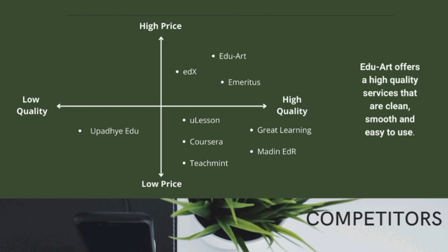EduEd has 8 competitors: Emeritus, EDX, Ulesson, Coursera, Tishmin, Great Learning, Madin Edu, and Upathe Edu. Emeritus, EDX, and EduEd are high quality and high price. Ulesson, Coursera, Tishmin, Great Learning, and Madin Edu are high quality and low price. Upathe Edu is low quality and low price. EduEd offers high quality services — clean, smooth, and easy to use — which is why our product falls in the high quality, high price category.